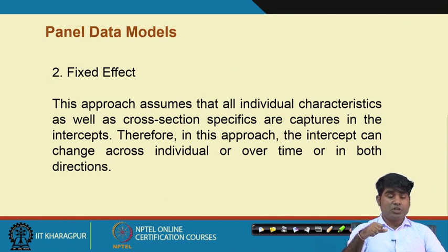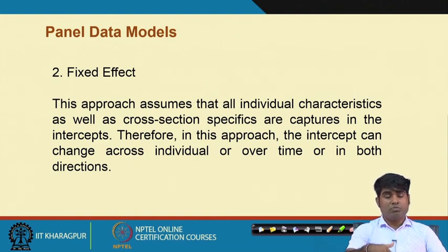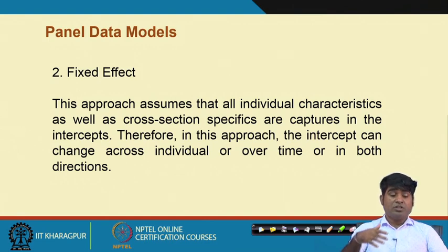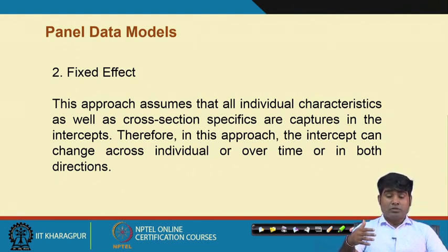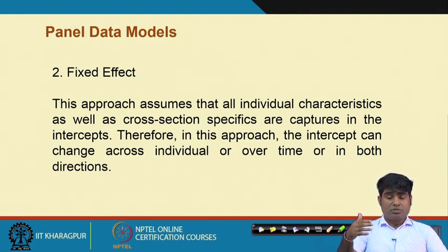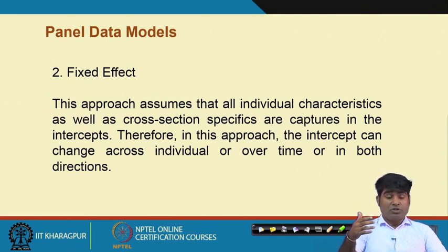In the second basket — the panel data model — we cover fixed effect, random effect, and GMM. The first one is the fixed effect model. This approach assumes that all individual features as well as the cross-sectional specifications are captured in the intercept only. That is the concept we call delta_i.